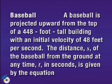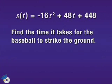A baseball is projected upward from the top of a 448 foot tall building with an initial velocity of 48 feet per second. The distance s of the baseball from the ground at any time t in seconds is given by the equation s of t equals negative 16 t squared plus 48 t plus 448.